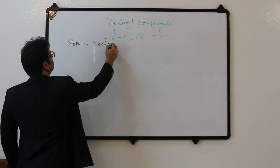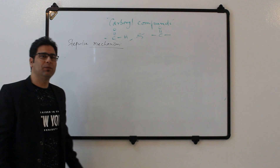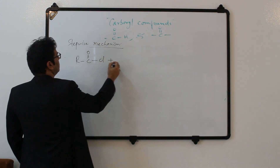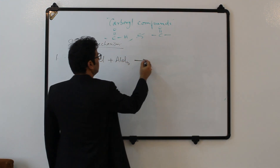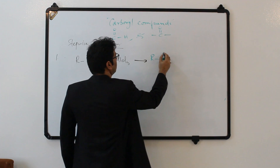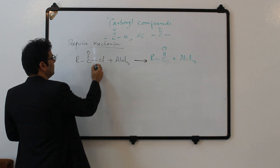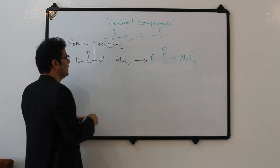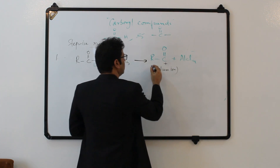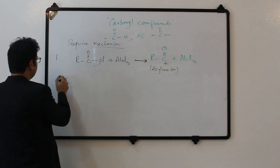Step number one: formation of the acylium ion. The acid chloride reacts with AlCl3 catalyst and it gives AlCl4⁻. The acid chloride becomes positively charged — it will have a positive charge — and this is called an acylium ion. Now this acylium ion is going to attack on the benzene molecule in step number two.